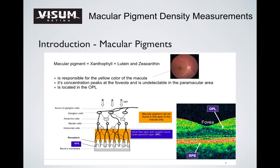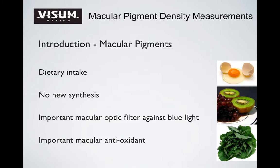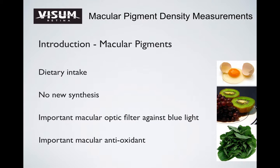Macular pigments in the human retina are responsible for the yellow color of the macula. There is no new synthesis of macular pigments reported, and the intake is by diet. Macular pigments are important optical filters against blue light, and they may also be very important antioxidants in the macula.